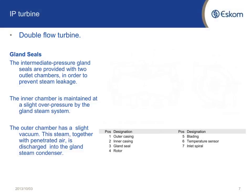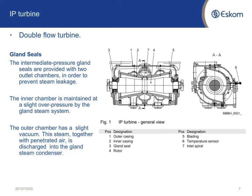For the IP turbine, the gland seals are almost the same except for the innermost chamber. The intermediate pressure gland seals are provided with two outlet chambers. The inner chamber is maintained at a slight overpressure by the gland steam system, and the outer chamber has a slight vacuum. Steam together with penetrated air is discharged into the gland steam condenser. I've also included an overview of the IP turbine showing the two steam bleeds in the middle of the turbine.